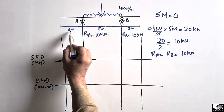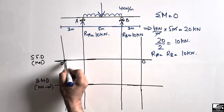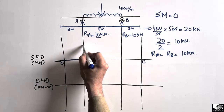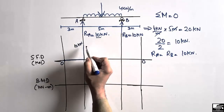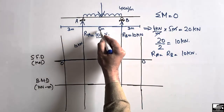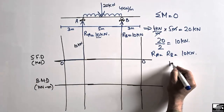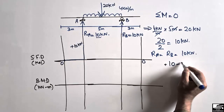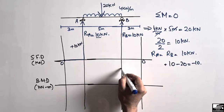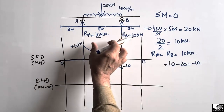Starting the shear force diagram from the left end: there is no load on the first 3-meter portion, so I draw a straight line at zero. Then there is an upward reaction of 10 kN at support A, so the line jumps up to +10 kN. The uniformly distributed load then acts downward over 5 meters, totaling 20 kN, so the shear force decreases linearly: 10 minus 20 equals minus 10.